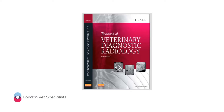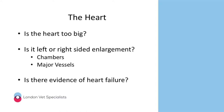In the last webinar we talked about how to use thoracic radiographs to assess the heart and decide whether a patient has primary heart disease. We broke that down by answering three specific questions: is the heart too big? If so, is the disease predominantly left-sided or right-sided? And we touched on how to tell whether the patient is in heart failure.